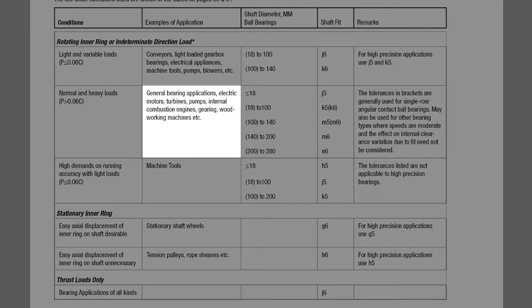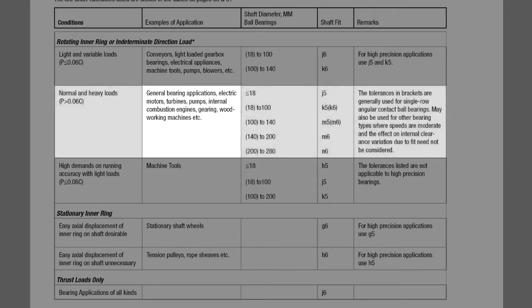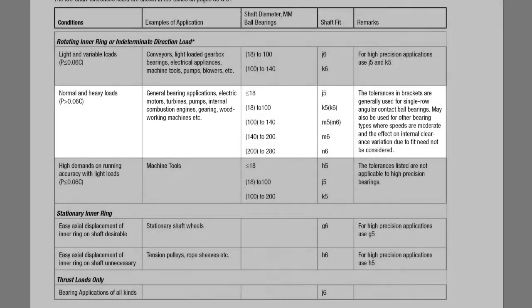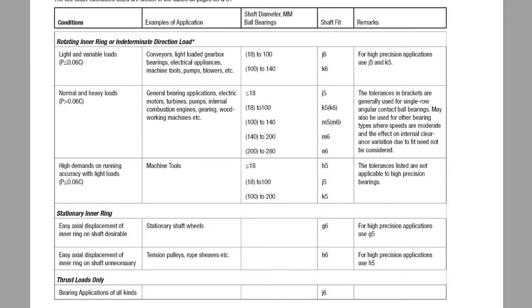Under examples of application you will see that typically an electric motor is a normal to heavy load application. When desired you can compare the expected load, or the P value, to the capacity of the bearing, or C value. If the P value is greater than 6% of C, then it is considered a normal to heavy load application.